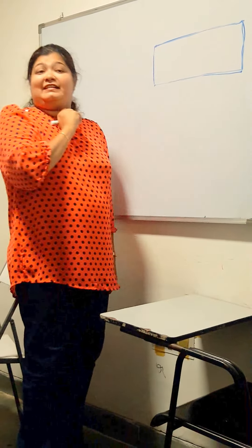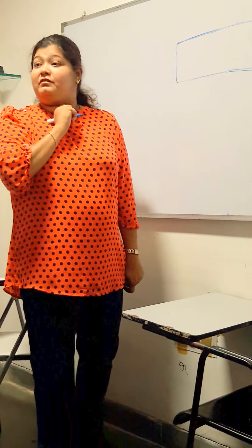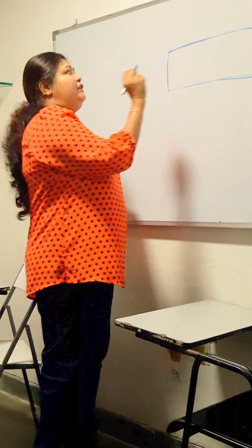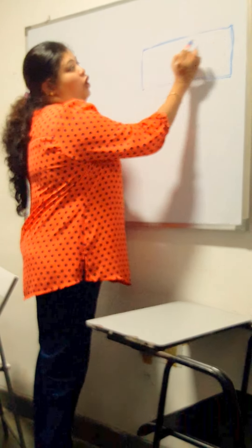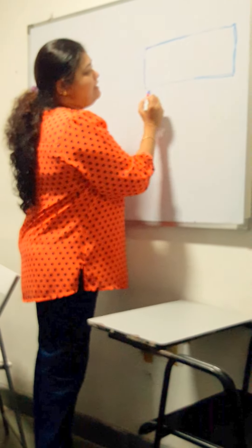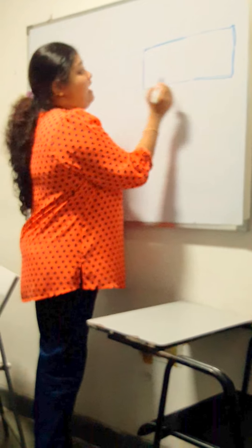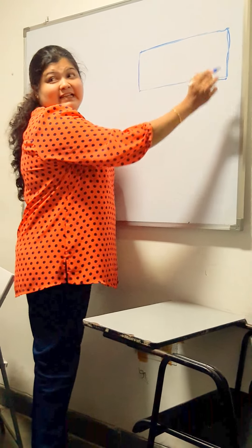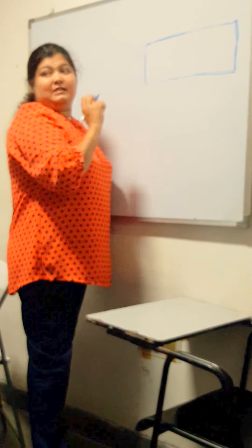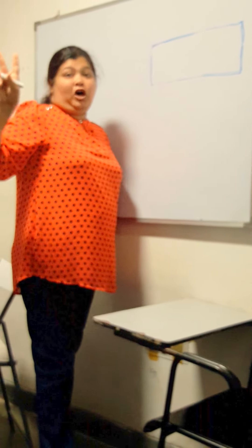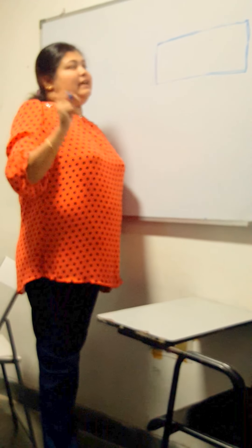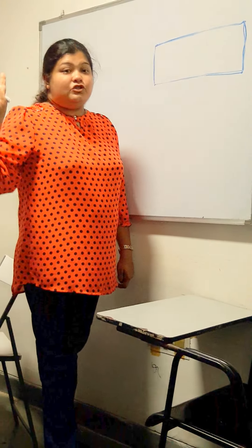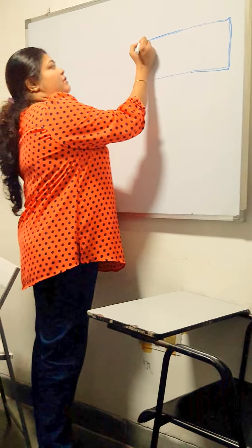How many sides does a rectangle have? Four sides. Very good. Rectangle has two long sides and two short sides. How many long sides? Two long sides. And how many short sides? Two short sides.